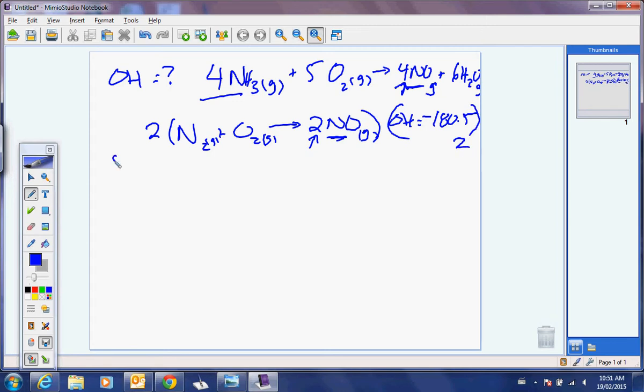This will give me 2N2 gases, plus 2O2 gases, yields 4NO gases. And my delta H for this would be, somebody help me, 361? Okay, kilojoules per mole.